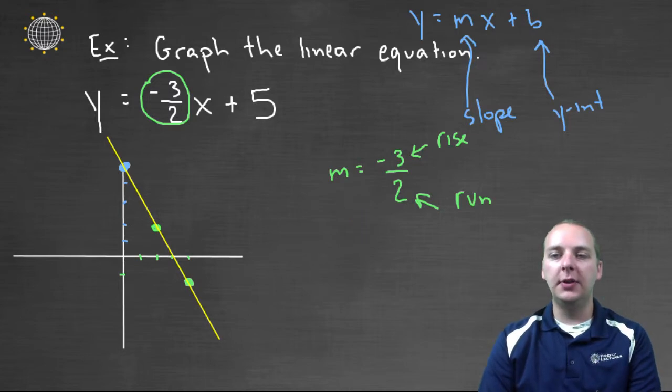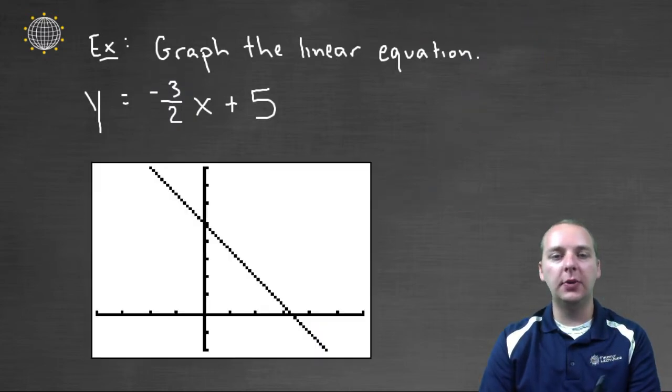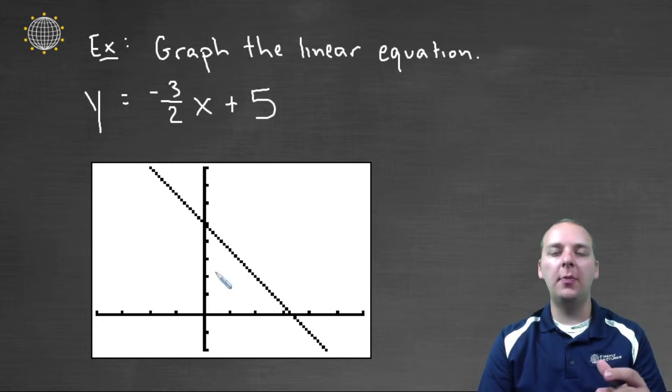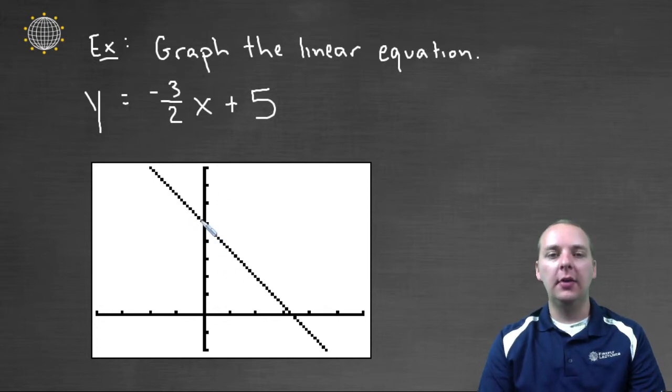Alright now, just to finish up this example before we go to the next one, what I've done here is, I went ahead and graphed this guy in my calculator, and you notice it looks exactly like our graph. Now the scaling might be off because of the units that I chose for the x and y-axis, but you'll notice that the graph is actually the same thing. If you look right here, it crosses the y-axis at one, two, three, four, five.